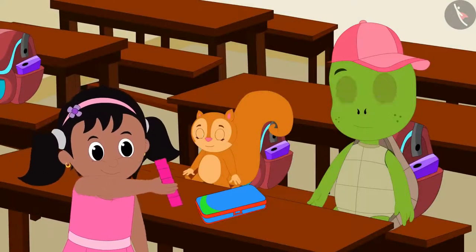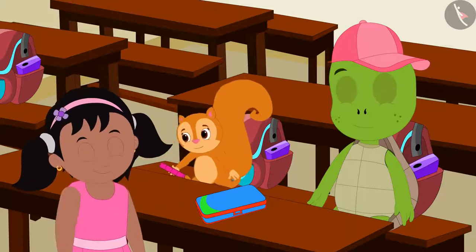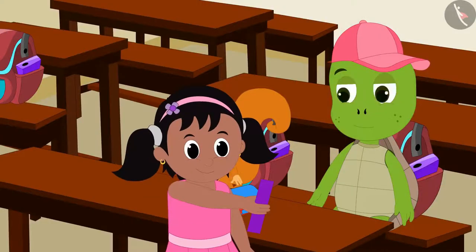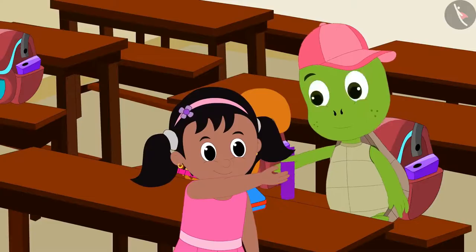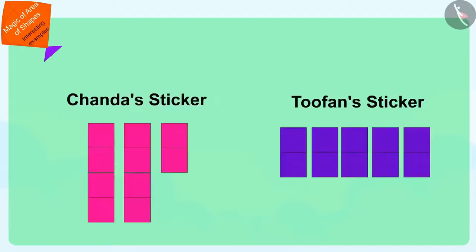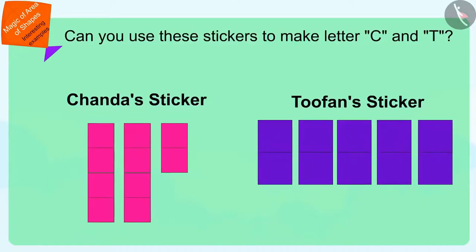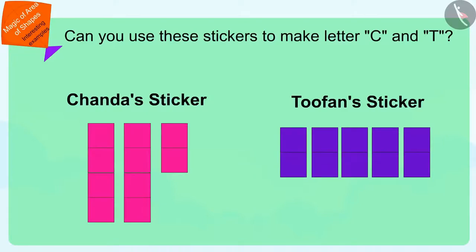Pinky gave 10 stickers each to both Chanda and Tufan to make their own letters. Children, can you use these 10 square-shaped stickers to make Chanda's name letter C and Tufan's name letter T? If you want, you can find a solution by stopping the video.